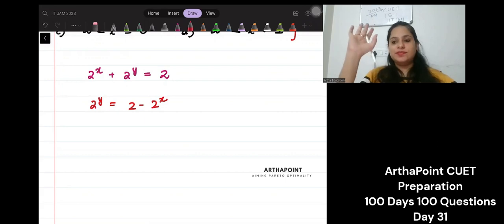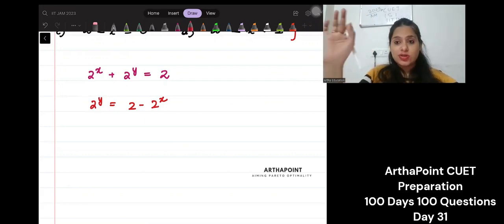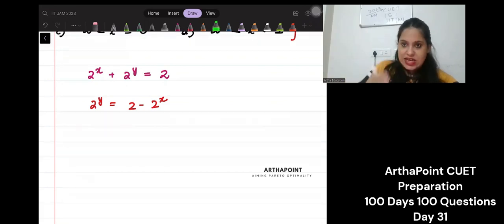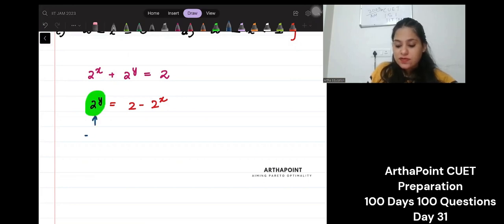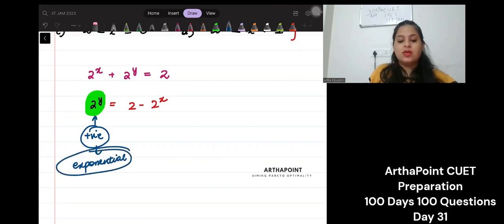Here is the trick. Tell me something. What do we know about exponential functions? We know that exponential functions are always positive. The left hand side, if I look here, the left hand side of this function is positive because it is exponential.